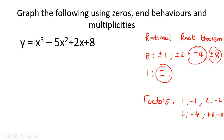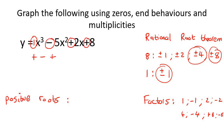We could use Descartes' rule of signs to narrow things down. Looking at sign changes in the original expression: positive, then negative, then positive, then positive — that's two sign changes. So there could be 2 or 0 positive roots.